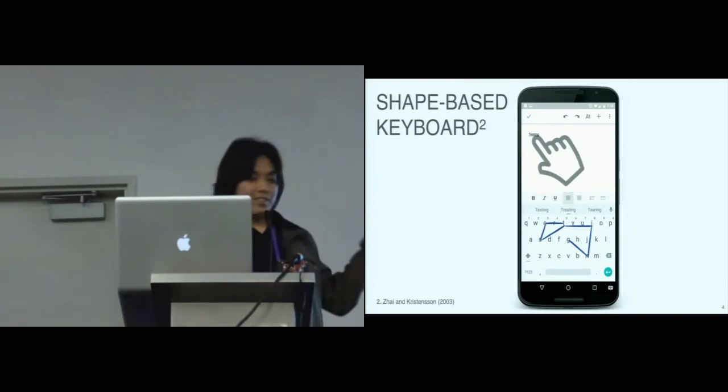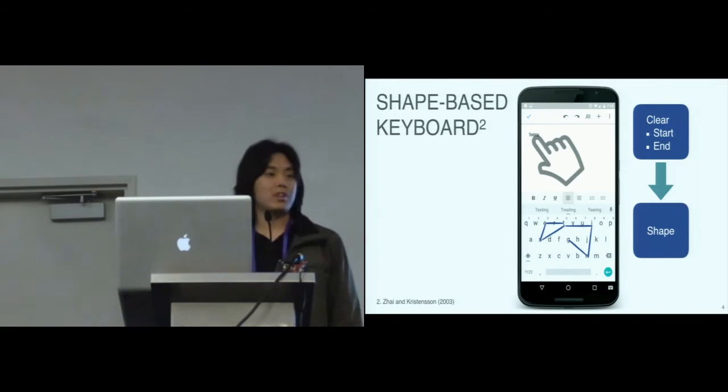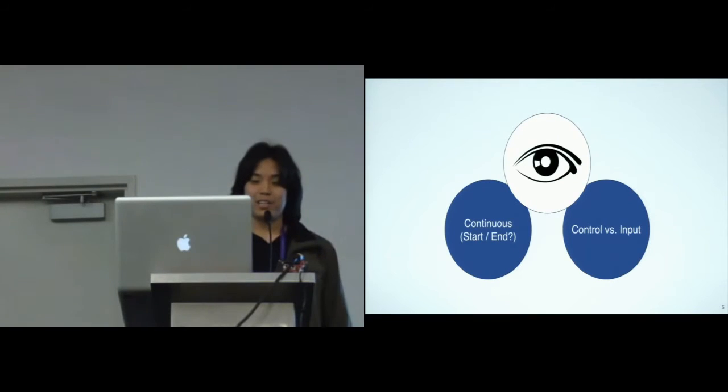So do we have to change anything in this to use this idea for text entry by gaze? And the first thing to consider is that the user's touch on the screen defines a shape with clear start and end positions. Unlike hands, the user's gaze is continuously on the virtual keyboard, so the start of a swipe may not be clear.